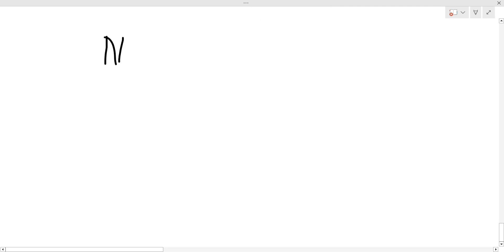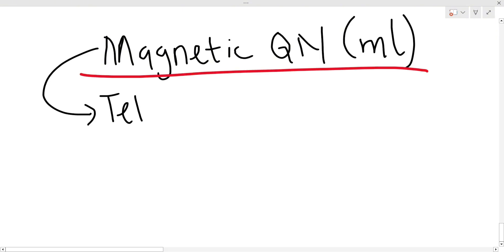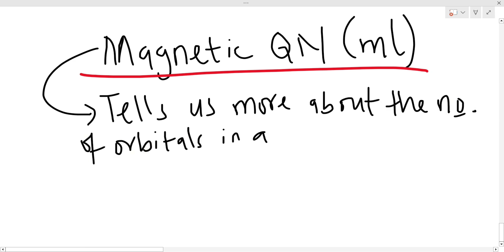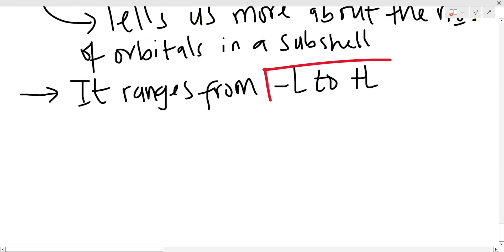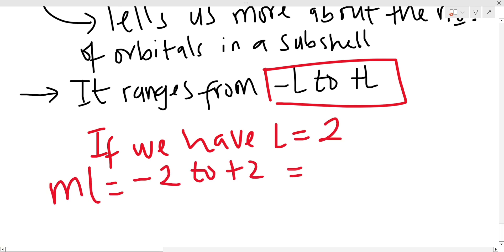Now let's talk about the magnetic quantum number. The magnetic quantum number tells us more about the number of orbitals in its subshell. It also ranges from -l to +l, where l is the azimuthal quantum number. So if you have an azimuthal quantum number of l equal to 2, the magnetic quantum number will range from -2 to +2, and that's -2, -1, 0, 1, and 2.